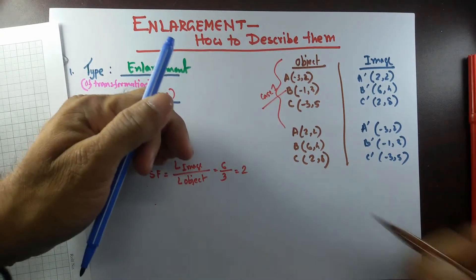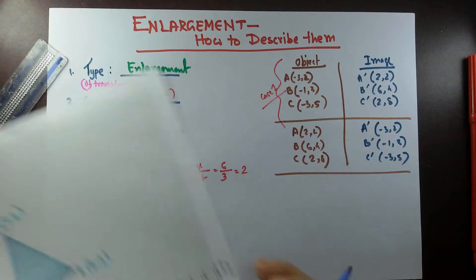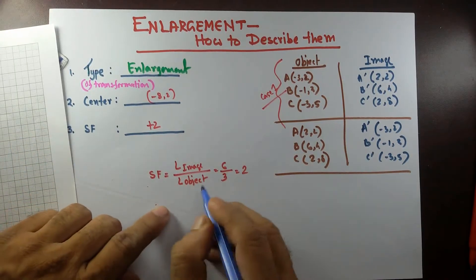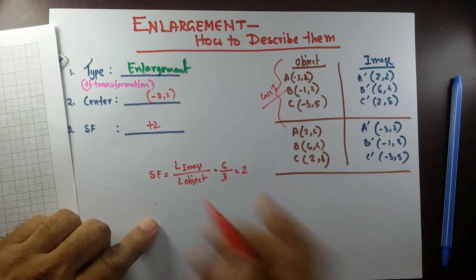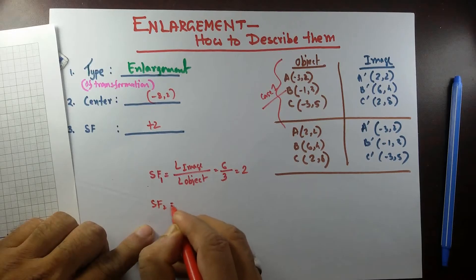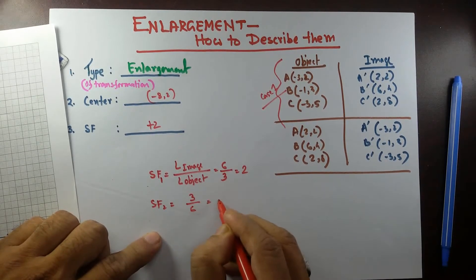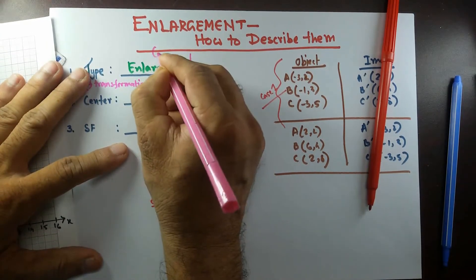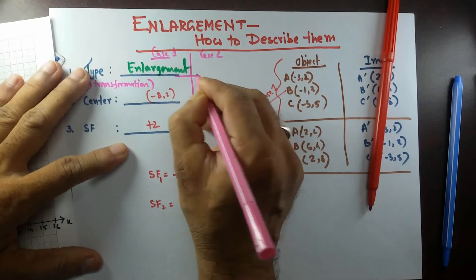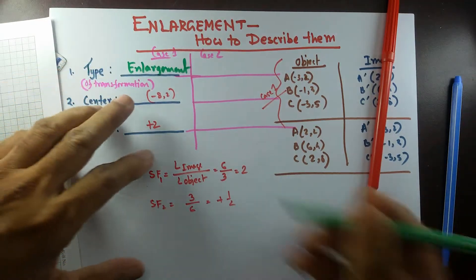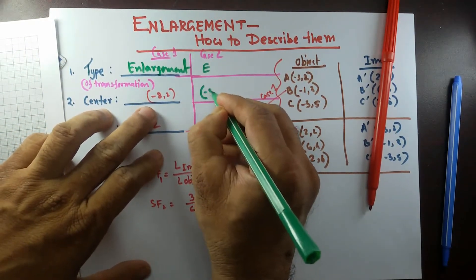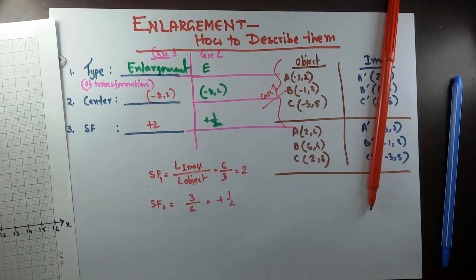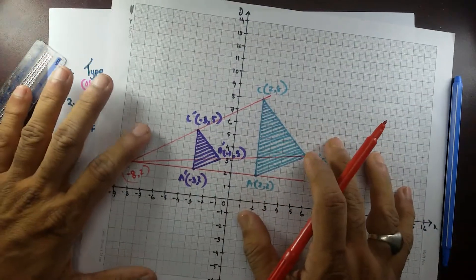In Case 2, since we switched the object and image, the scale factor calculation also switches. The length of the image is now 3 and the length of the object is 6, so scale factor = 3 ÷ 6 = one half. The center remains the same at (−8, 2). So Case 2 is: enlargement, center (−8, 2), scale factor one half — the reciprocal of Case 1.